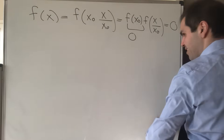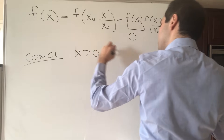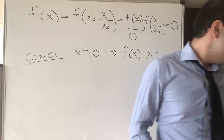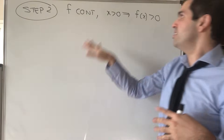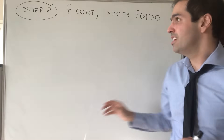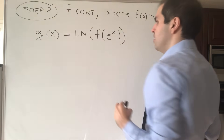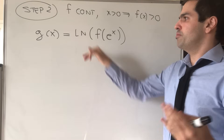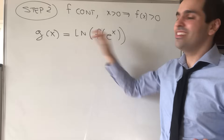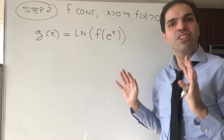So the conclusion is: x positive implies f of x positive — f maps ℝ⁺ to ℝ⁺. This allows us to define the following function: let g of x be ln of f of eˣ. It looks a bit weird, but if you do the algebra, this should remind you of conjugation — like h inverse composed with f composed with h, where h is eˣ and ln is the inverse. Once we have this, we can transform our original identity to one that's more familiar.